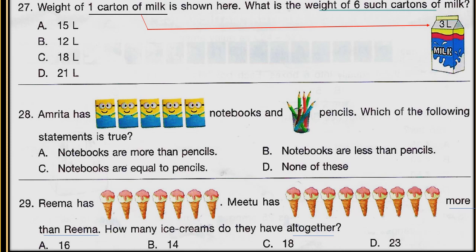Next question: Rima has the ice creams shown in the figure. Mithu has some more than Rima. How many ice creams do they have altogether? Count the number of ice creams Rima has. Mithu has that much more than Rima, so first calculate how many Mithu has, then calculate how many they have altogether.